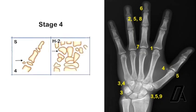In fourth stage, there is mineralization of the ulnar sesamoid bone of the metacarpophalangeal joint of the thumb.